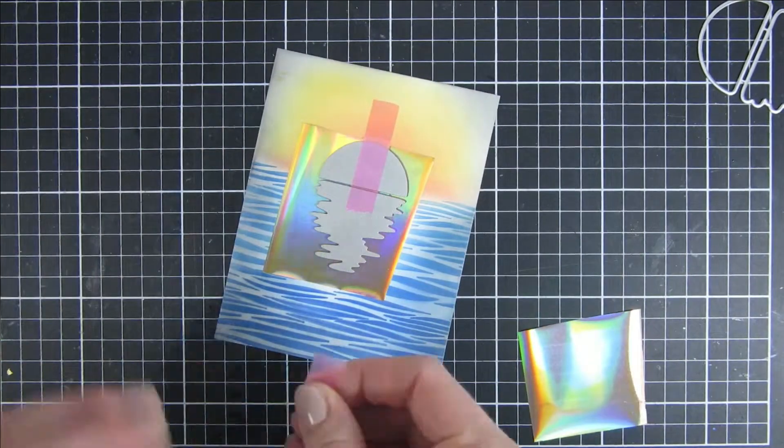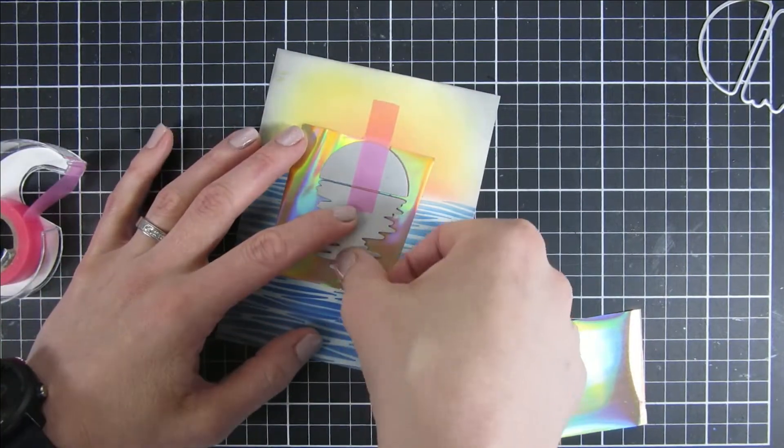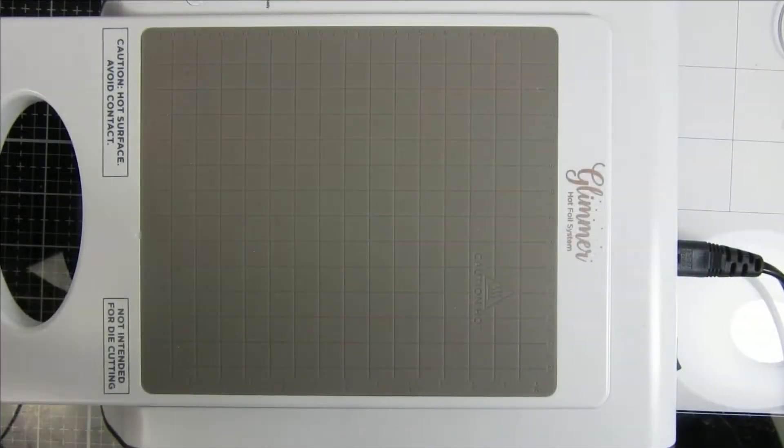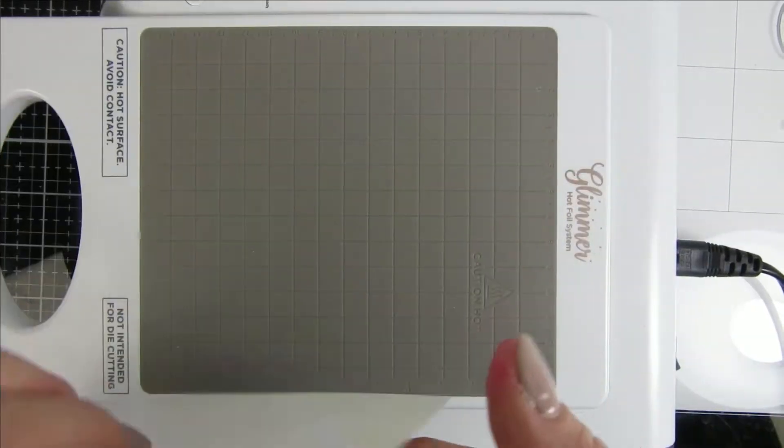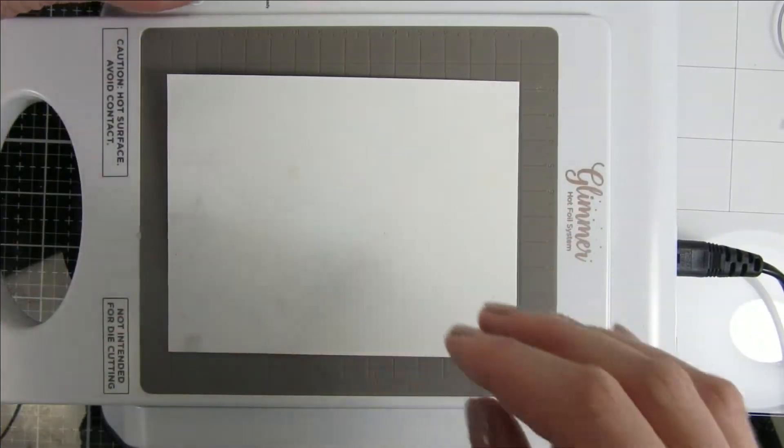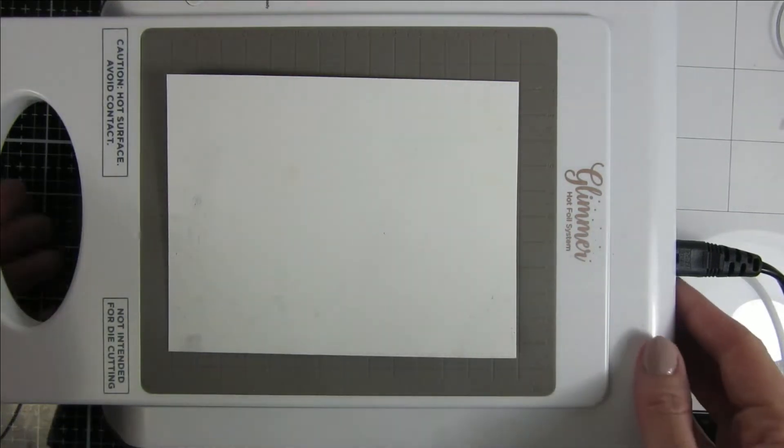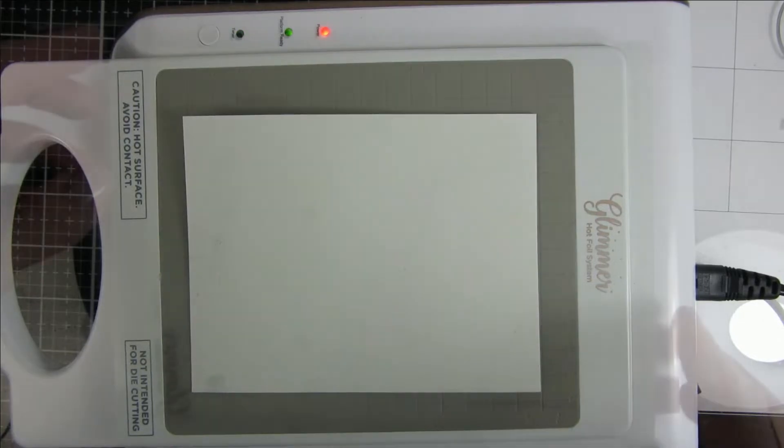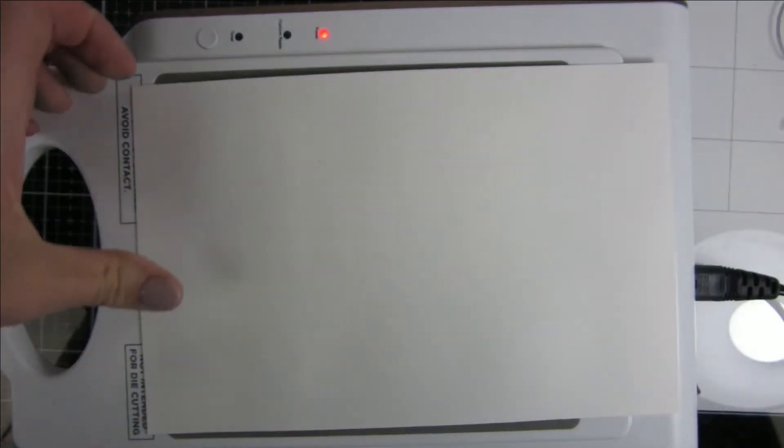For my sun and the reflection in the water I went with the same color. You can see that they are split so you can use different foils if you like but I wanted them to be together. Here is my glimmer hot foiling system. I have taped everything in place, I will turn my paper and push the button and heat my platform up. When the light hits green and everything is ready I run it through my Big Shot.